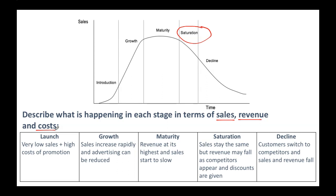In saturation, sales are staying the same and might just start to dip a little bit. Revenue may fall as competitors are getting more traction in the market — stealing some of your customers — and you might need to give discounts to retain current customers and keep them loyal. Decline is when customers have switched to competitors or the product has gone out of fashion, and your sales and revenue are falling.